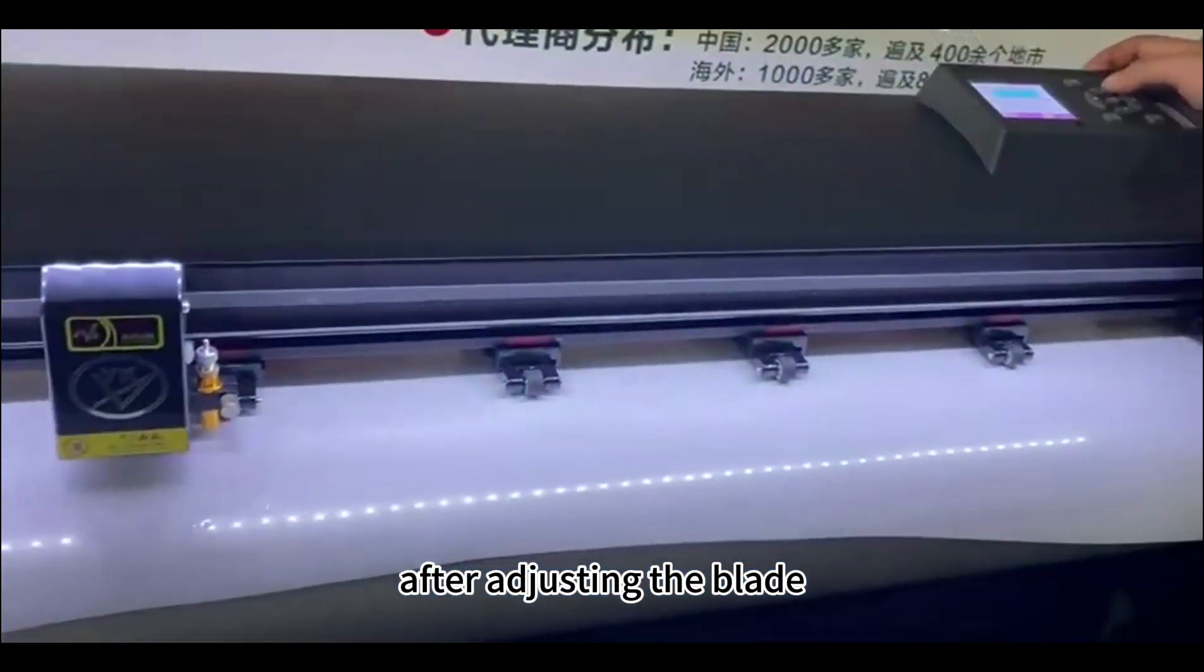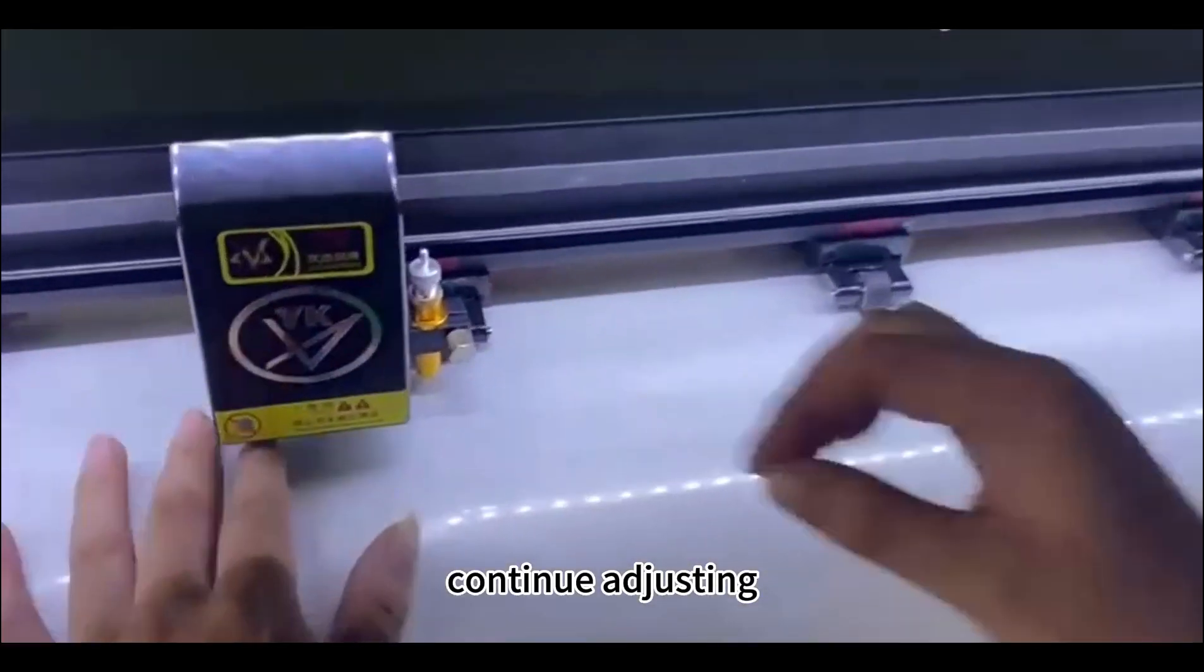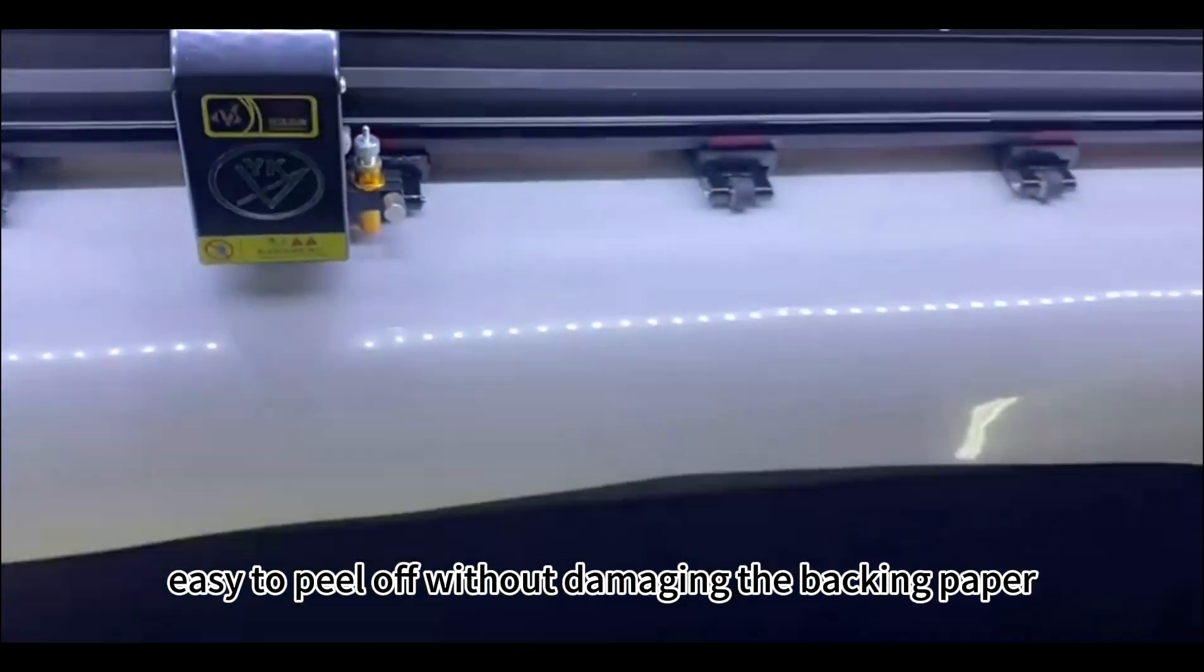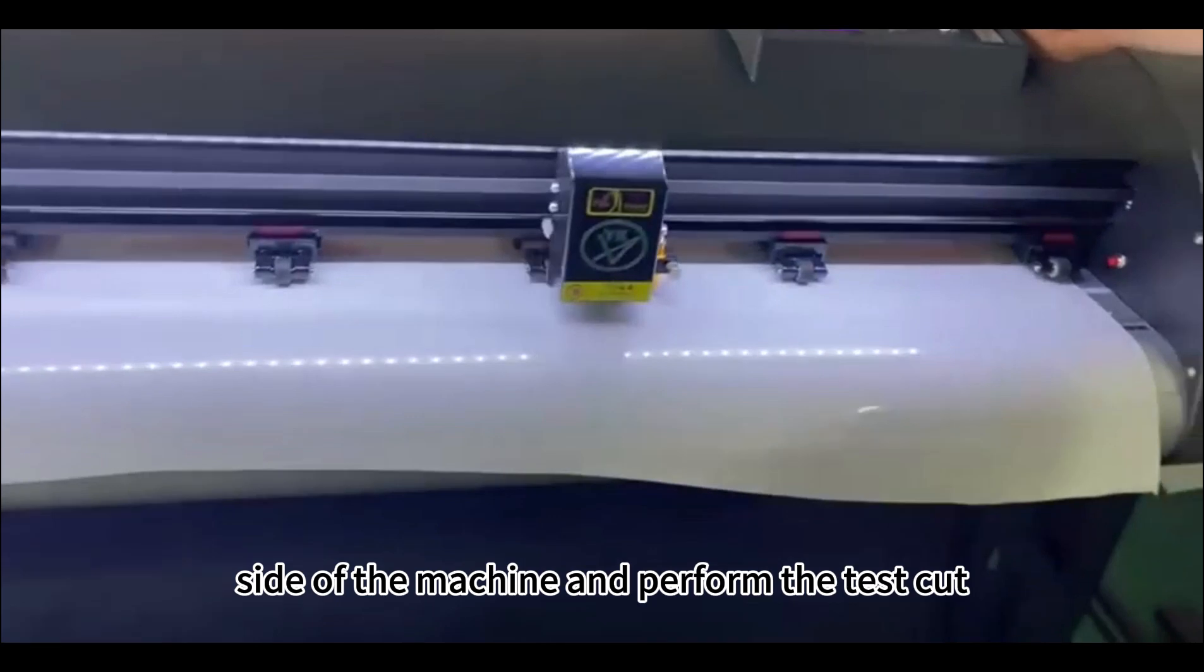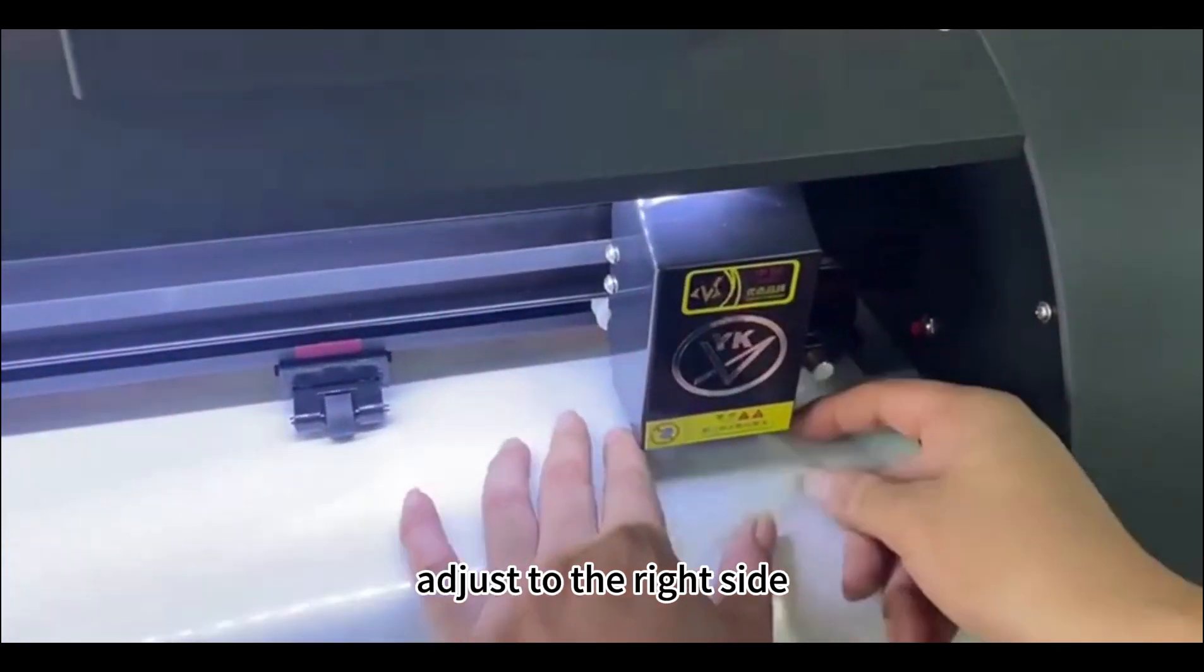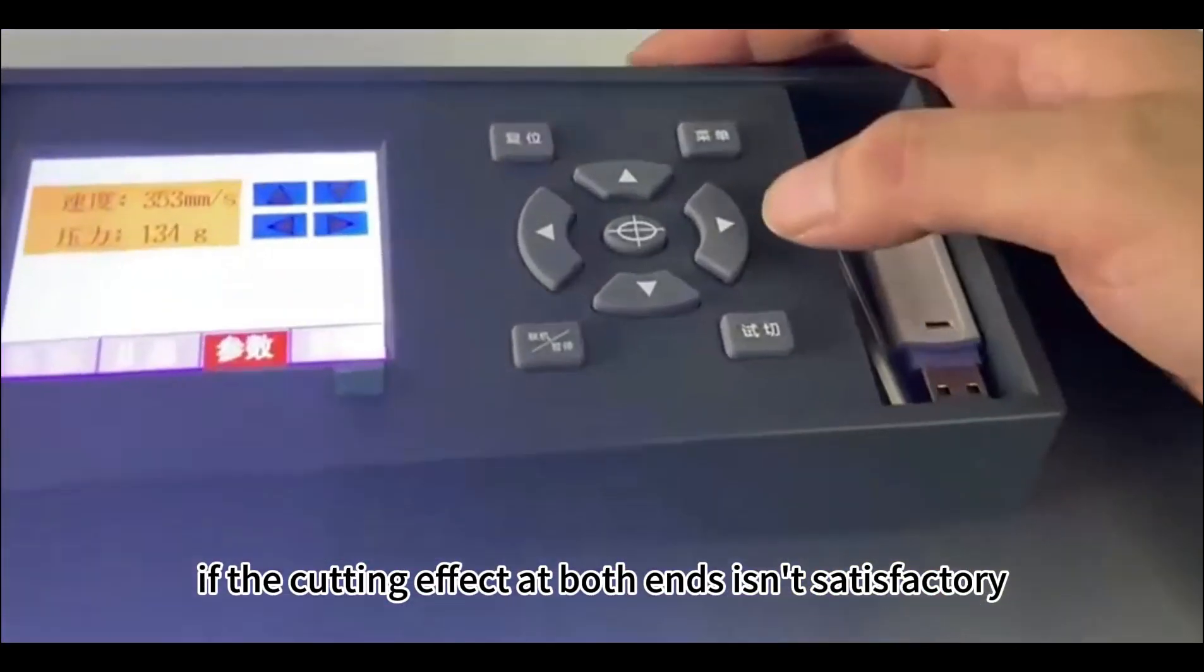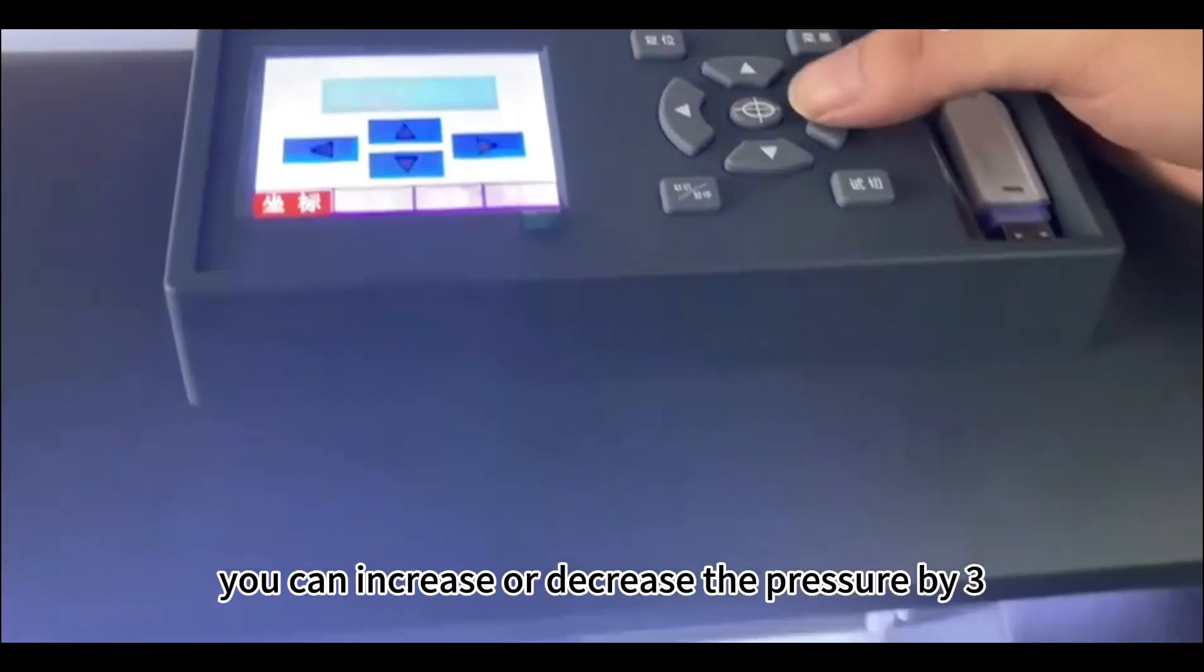After adjusting the blade, press the test cut button again. Continue adjusting until the top layer of the film is easy to peel off without damaging the backing paper. Once the middle setting is correct, move the blade to the left side of the machine and perform the test cut. After confirming the left side is correct, adjust to the right side and check the cutting effect there. If the cutting effect at both ends isn't satisfactory, you can increase or decrease the pressure by three.